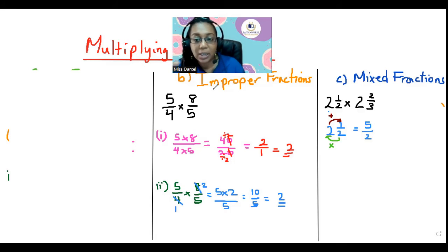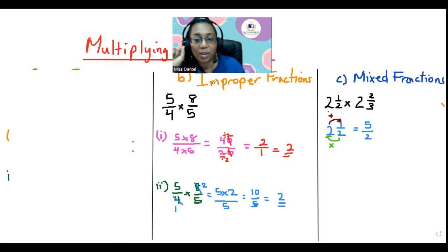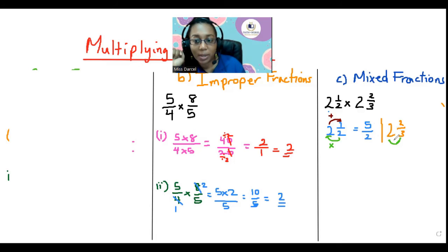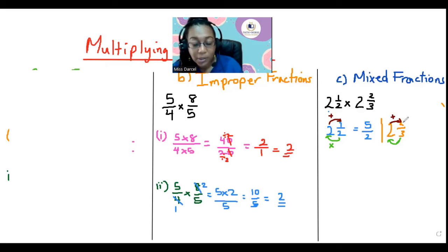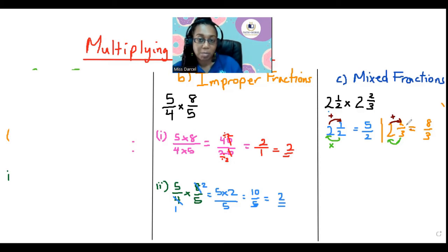Now let's convert 2 and 2 thirds. We multiply the denominator by the whole number: 2 by 3 is 6. Then we add the product to the numerator: 6 plus 2 is 8. So our improper fraction is 8 over 3. Now we have changed both mixed numbers into improper fractions.